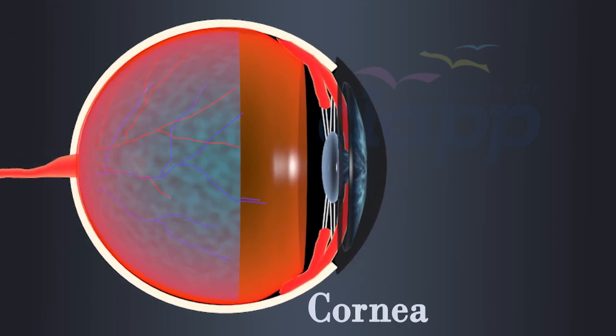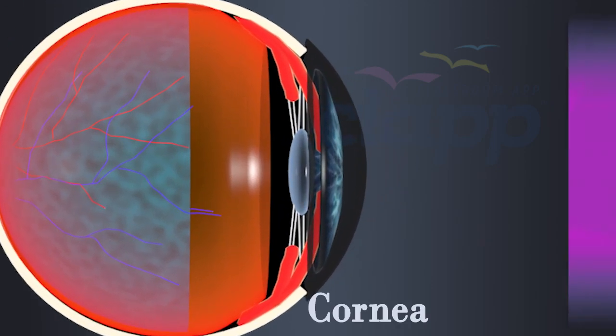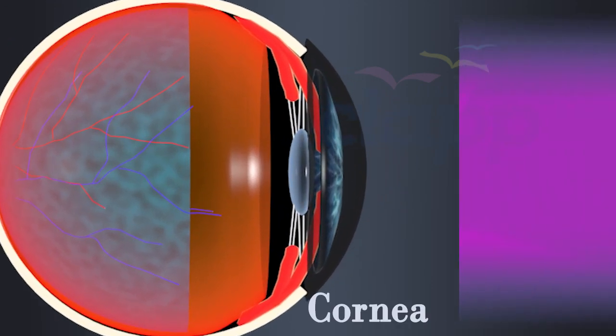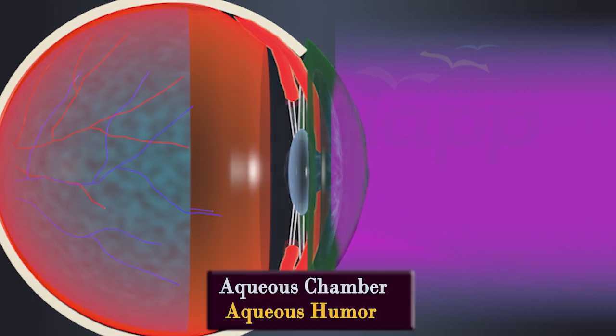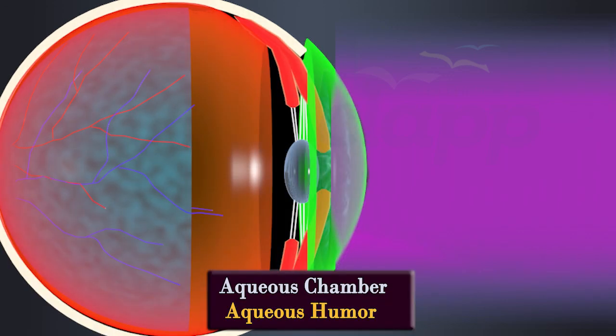Light enters the eye through the cornea, the transparent outer covering of the eye. The cornea helps to focus incoming light onto the lens. Then the light will pass through aqueous humor, a watery fluid that fills the aqueous chamber, which lies behind the cornea.